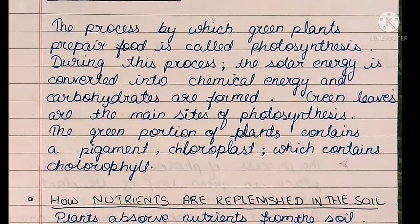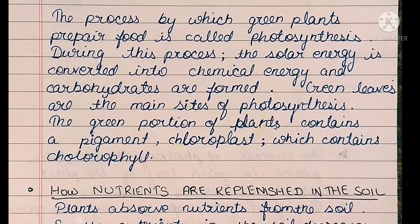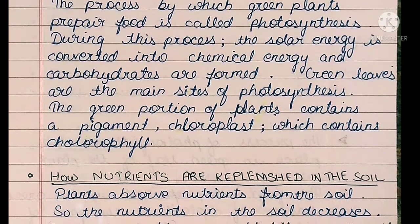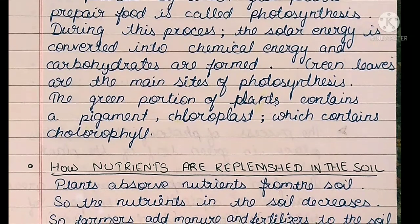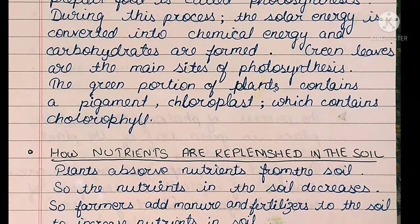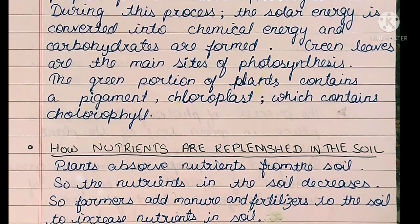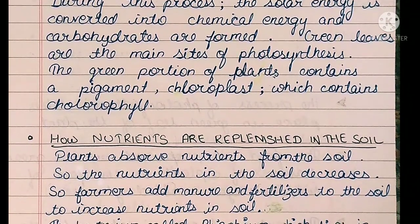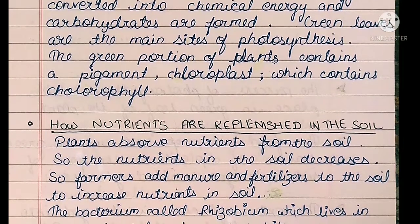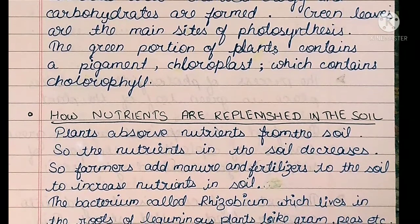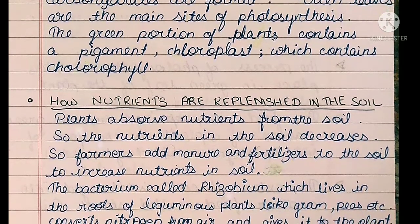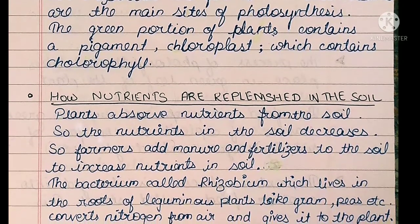How nutrients are replenished in the soil: Plants absorb nutrients from the soil, so the nutrients in the soil decrease. Farmers add manure and fertilizers to the soil to increase its nutrient content. A bacterium called Rhizobium lives in the roots of legume plants like gram and peas, and converts nitrogen from the air and gives it to the plants.